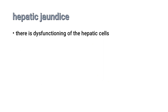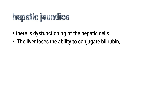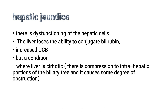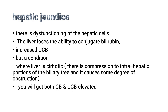In hepatic jaundice, there is dysfunction of hepatic cells, meaning the liver is not functioning normally and loses its ability to conjugate bilirubin, resulting in increased unconjugated bilirubin. In conditions such as cirrhosis, there is also compression of the intrahepatic portions of the biliary tree, causing obstruction. Even the small amount of conjugated bilirubin produced by the cirrhotic liver cannot be released into bile; instead, it is released into the bloodstream, causing jaundice. Therefore, in hepatic jaundice there is elevation of both unconjugated and conjugated bilirubin.